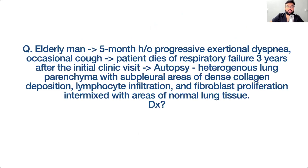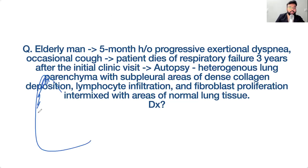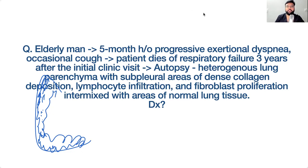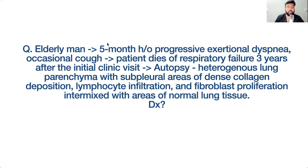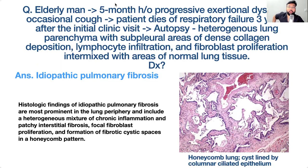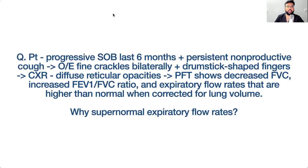An elderly man with five months of progressive exertional dyspnea and occasional cough dies of respiratory failure three years after his initial clinic visit. Autopsy shows heterogeneous lung parenchyma with subpleural areas of dense collagen deposition, a lot of lymphocytes, and fibroblast proliferation. This is idiopathic pulmonary fibrosis — a very progressive disease with extensive fibrosis.